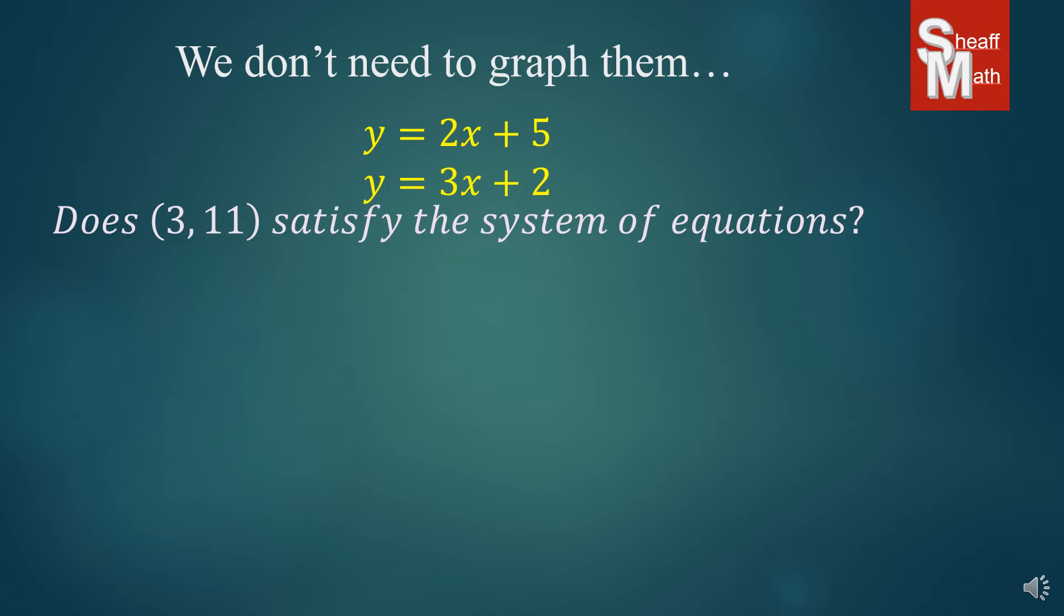So I'm going to put 3 in for x, 11 in for y, and make sure that you put the right number in the right spot. It's very important. So notice I put 3 into the x and 11 in for the y. And so we simplify. We get 11 equals 6 plus 5, and sure enough, 6 plus 5 does equal 11.